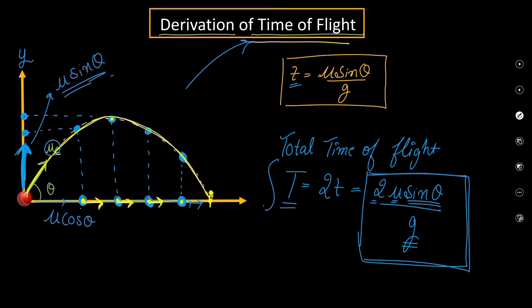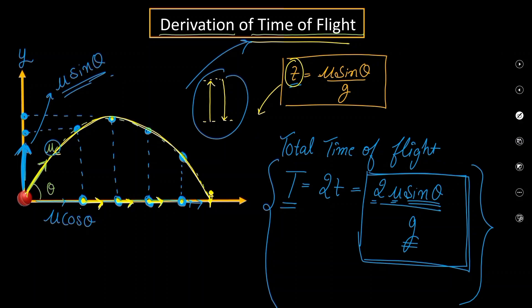This is the derivation for time of flight. You might wonder why we simply multiplied by 2 — the time the ball takes to reach the topmost height is equal to the time it takes to come back down. The motion under gravity is symmetric. With this, we are done with the derivation of time of flight for a ball in a ground-to-ground projectile type. If there are any doubts, you can comment. See you in the next video — bye-bye.